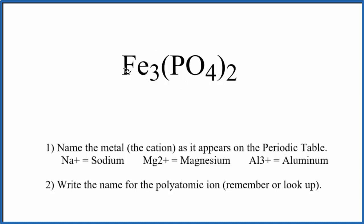First, we write the name for the Fe. That's the metal. Next, we write the name for the polyatomic ion. That's the PO₄, the phosphate ion. Lowercase p. And so far, the name for Fe₃(PO₄)₂ is iron phosphate.